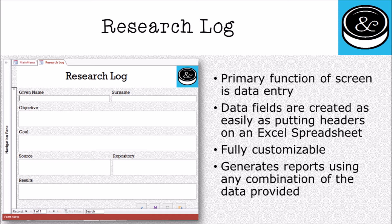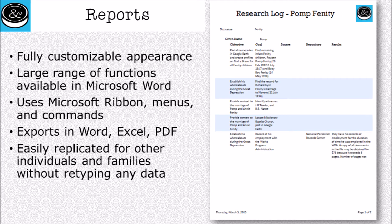I've created a fully customizable research log. You can see I've got the name of the person, my research objectives, my goals, the sources I've used, the repositories I've checked, and what the results of my research were. You can add more fields or take away from this — create whatever type of research log you want. When sorted by person, it will continue to add to the file of that same individual without having to find a copy of whatever research log you've already created. Generating reports is a completely separate step.